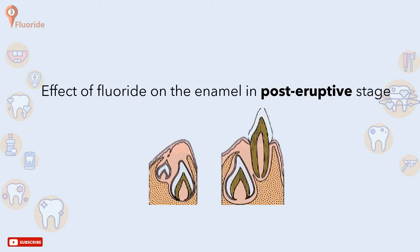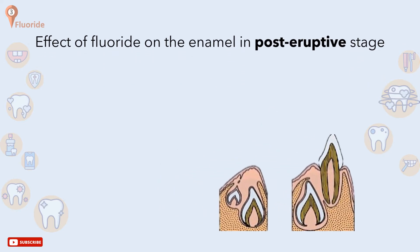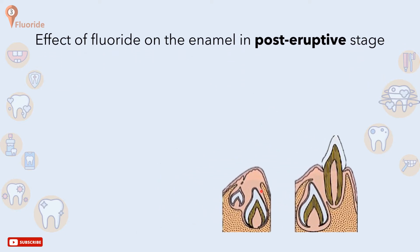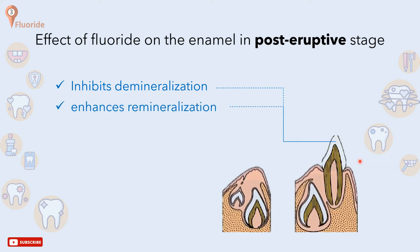Now to the post-eruptive effects of fluoride on enamel. Keep in mind that newly erupted teeth derive the most benefit. It inhibits demineralization and promotes remineralization of early caries, enhances the degree and speed of remineralization, and renders the remineralized enamel more resistant to further attack. Also, it decreases acid production in plaque by inhibiting glycolysis in cariogenic bacteria. An increased concentration of fluoride in plaque inhibits the synthesis of extracellular polysaccharides. Note that fluoride is more effective in reducing smooth surface caries than pits and fissure decay.